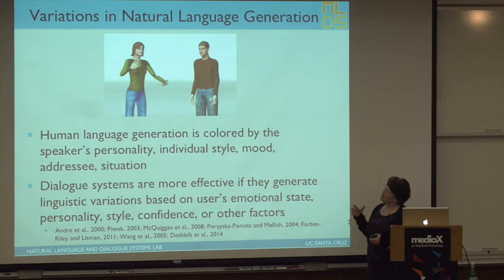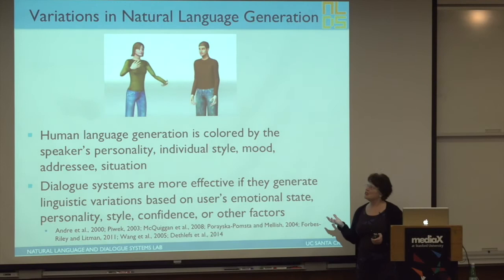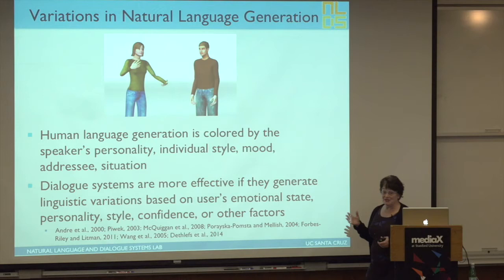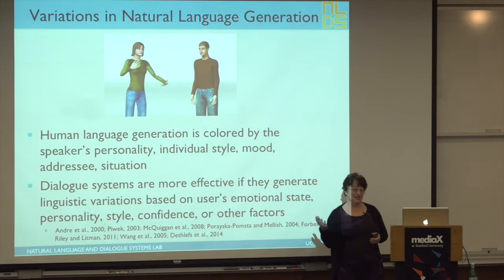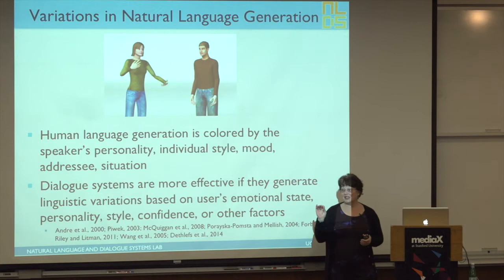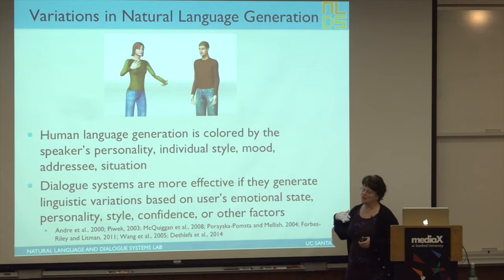To do that, we want to be able to generate lots of different variations in how the computer — how the agent — talks to you. Siri is actually a script, like a movie script. What Siri says is already spelled out in advance for every state. What we're trying to do is, by using a deep representation of meaning, generate utterances that can be tailored to the situation, the person you're talking to, the mood of the speaker, the agent's personality, the agent's style — all these kinds of things.